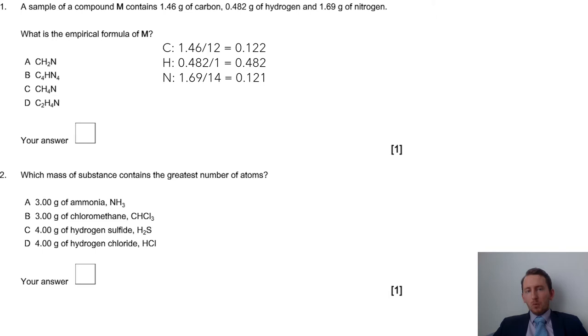What we're going to do is take the amount that we have and work out what the moles are. So take the mass and divide it by the atomic mass of each particular one. So carbon is 12, hydrogen will be 1, nitrogen is going to be 14.